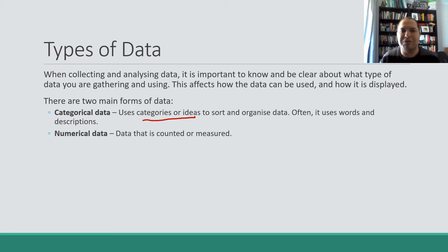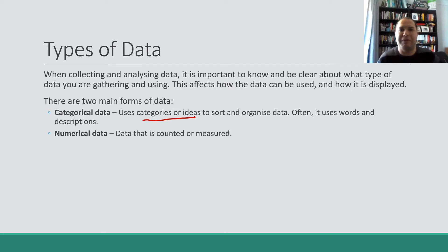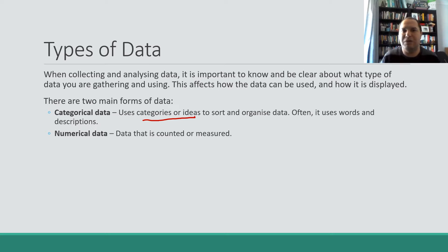Numerical data is where you're looking for data that's numbers — you're counting something or measuring something, and the data you need are numbers. For example, if you're counting the number of cars that go through an intersection, that's numerical data because it involves numbers and counting, with the data being how many cars came through the intersection.